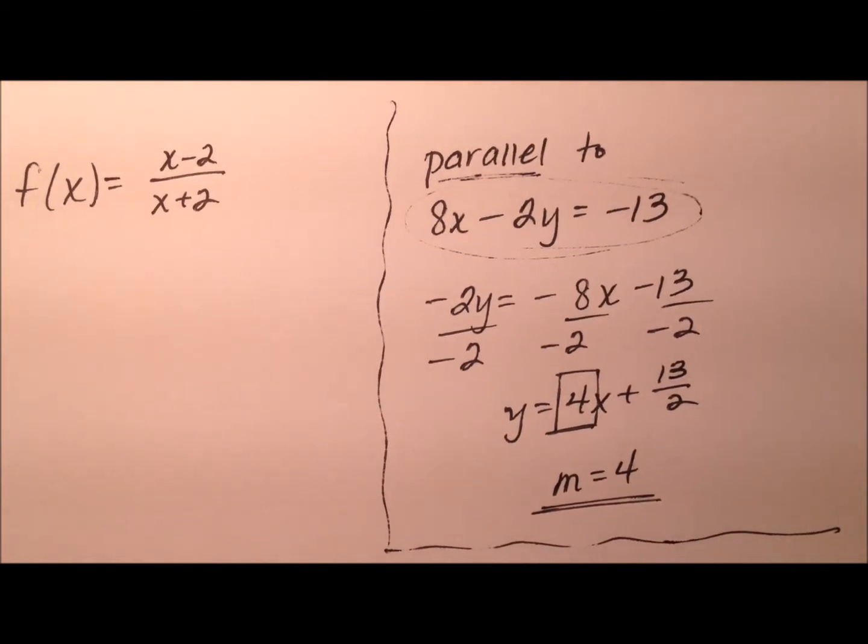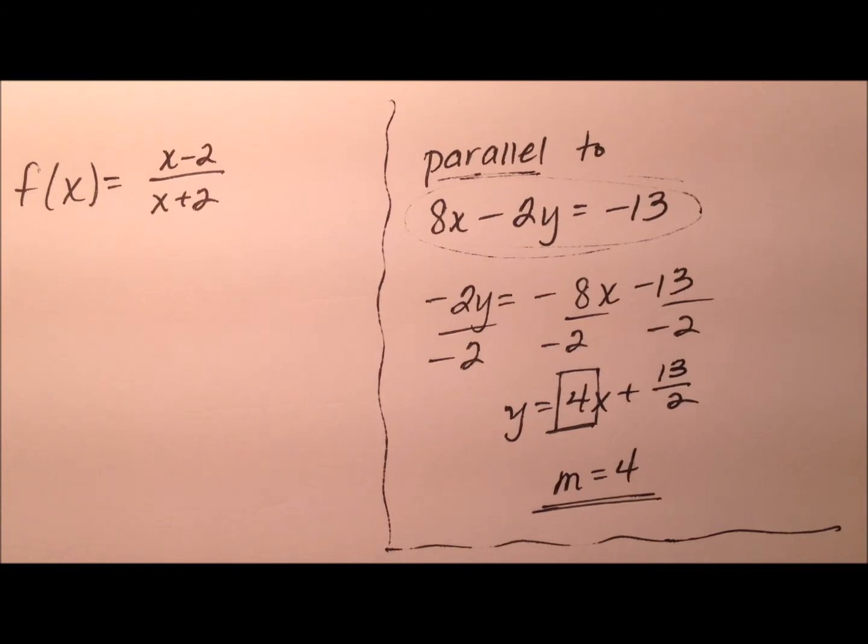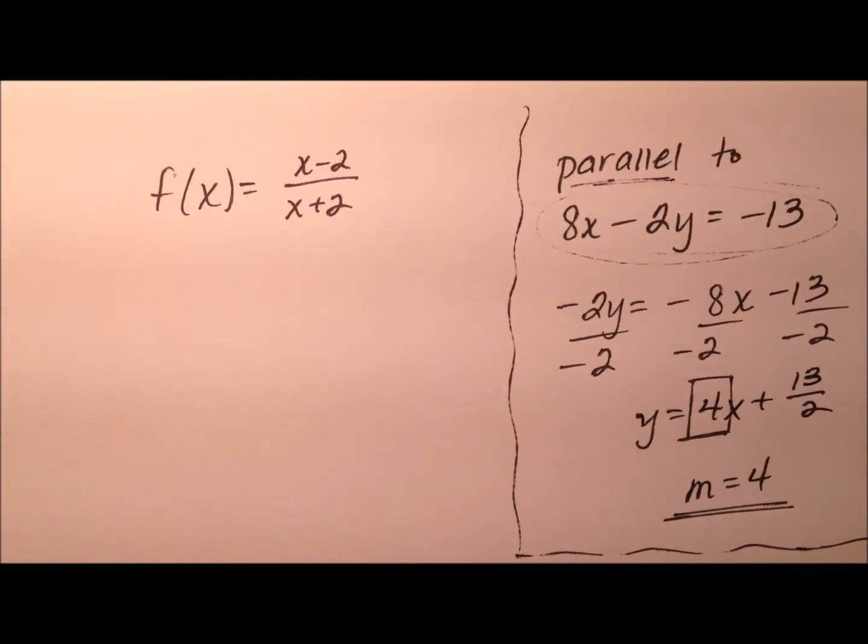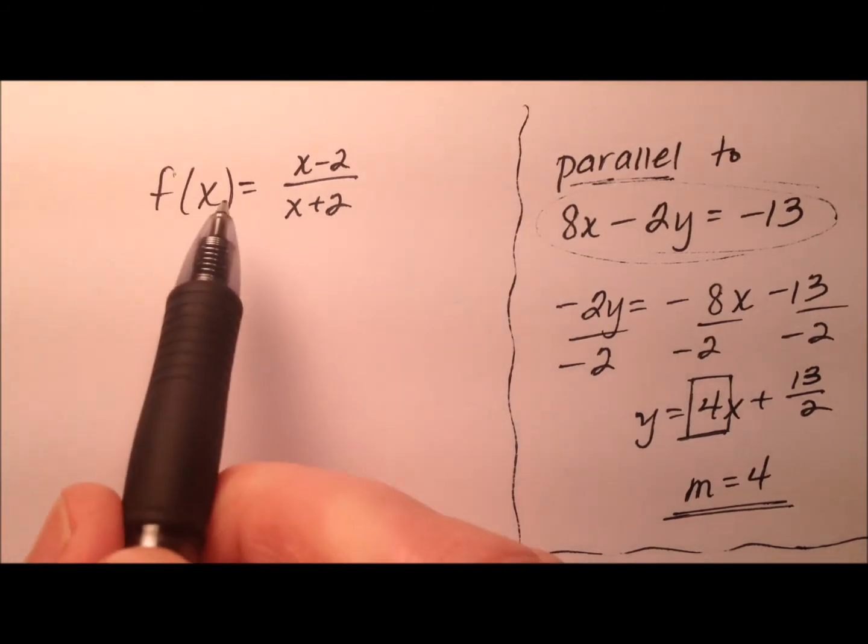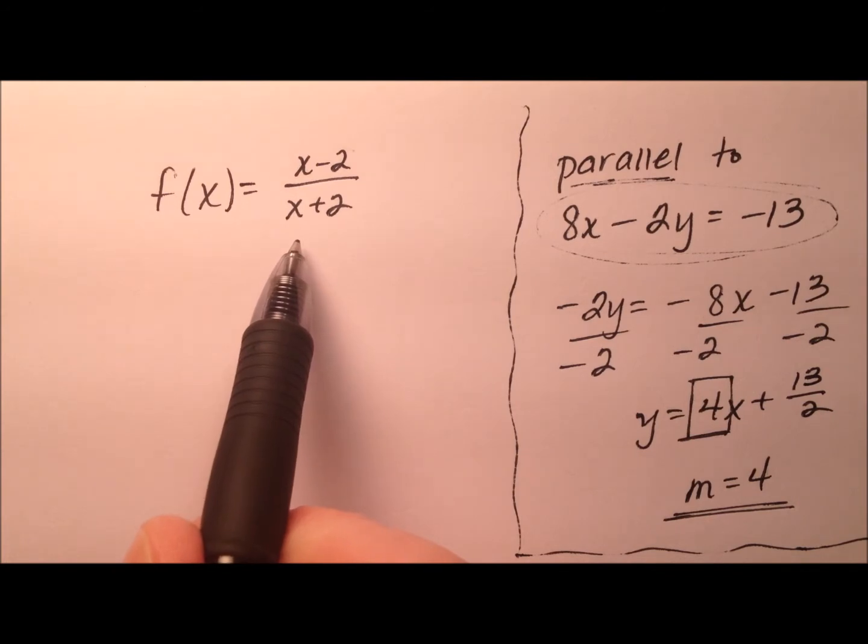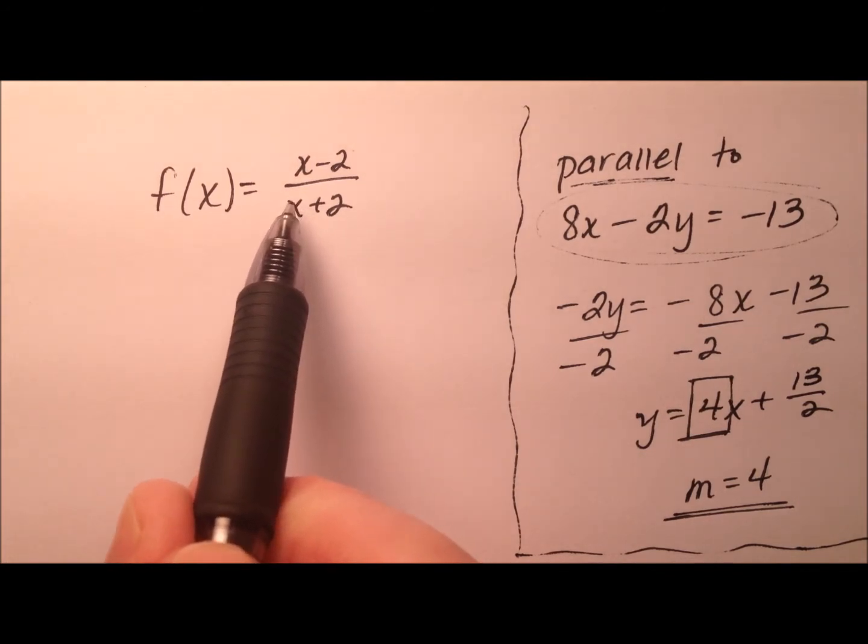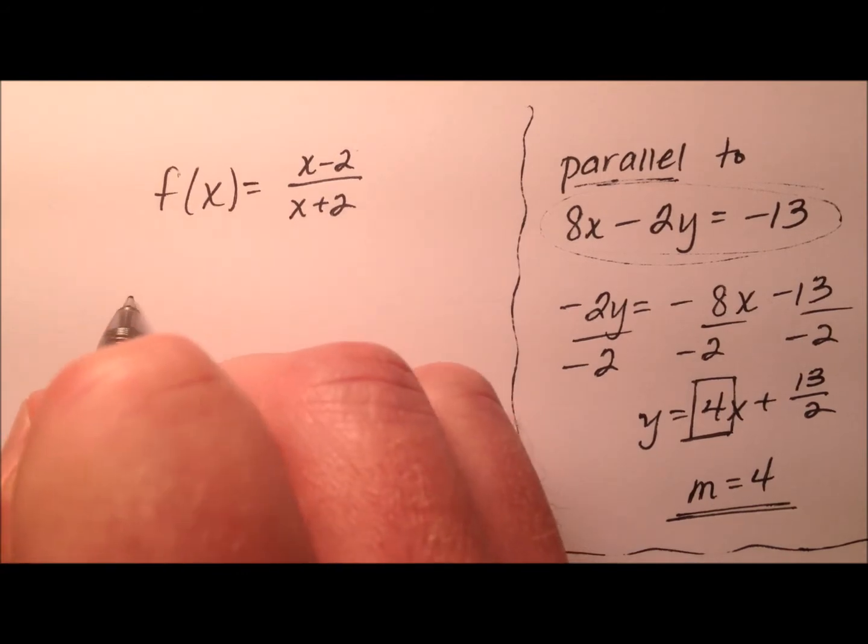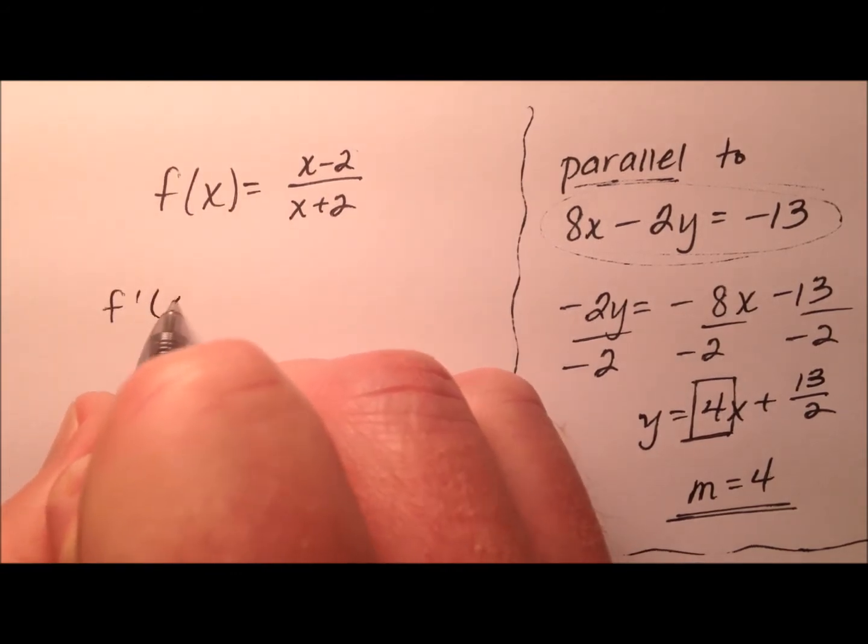So if it's parallel to a line that has a slope of 4, that means all of my tangent lines are going to have a slope of 4. So I need to go ahead and take the derivative of my function and set that equal to 4 to find all the x values where that actually takes place. So let's go ahead and work the derivative of this function.